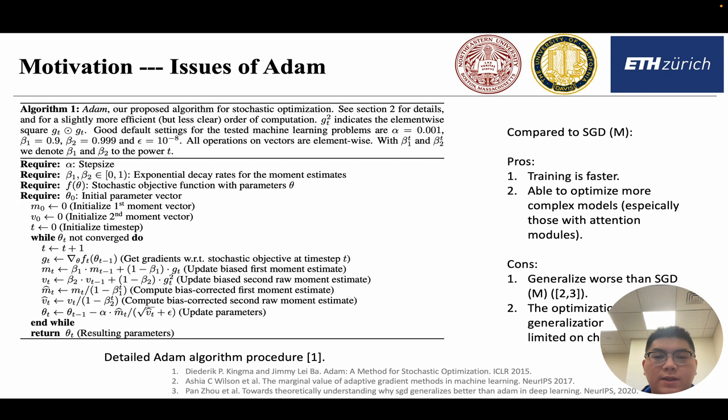Secondly, Adam is able to optimize more complex models, especially those with attention modules. That's why Adam or AdamW is widely used in natural language processing, where transformers are the basic models. But Adam also has some obvious cons, according to recent researchers' findings.